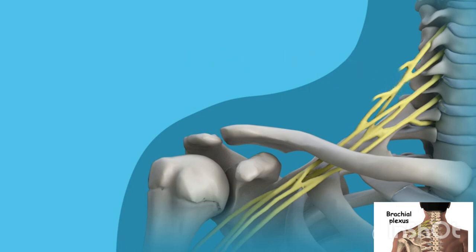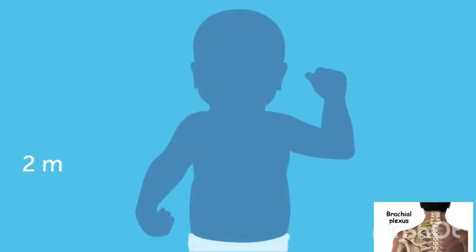If the nerves are completely torn, either at the nerve roots (called a rupture) or torn from the spinal cord itself (called an avulsion), it is less likely to heal on its own and surgical repair may be needed. If your baby cannot move their elbow by two months of age, it is important to see a specialist.